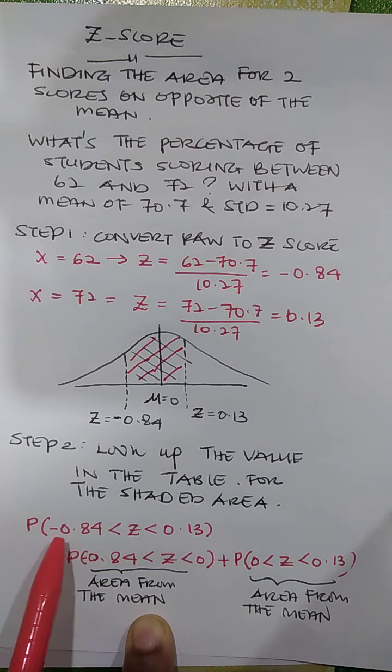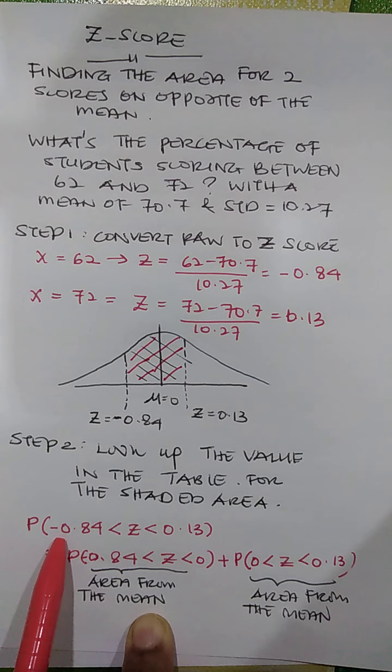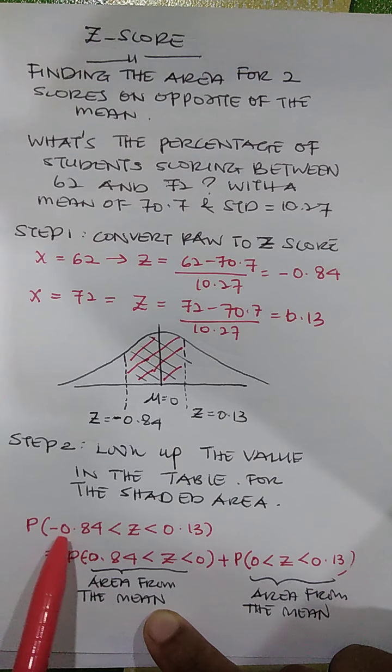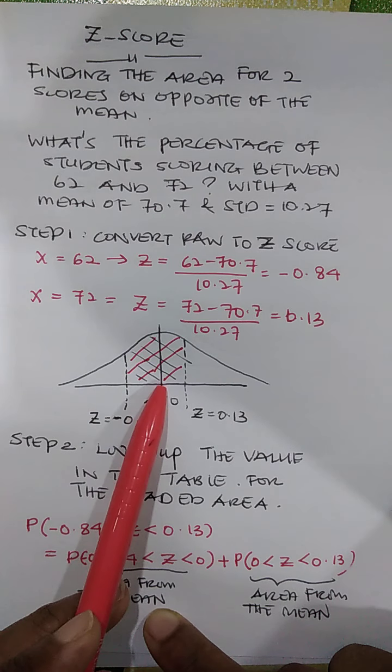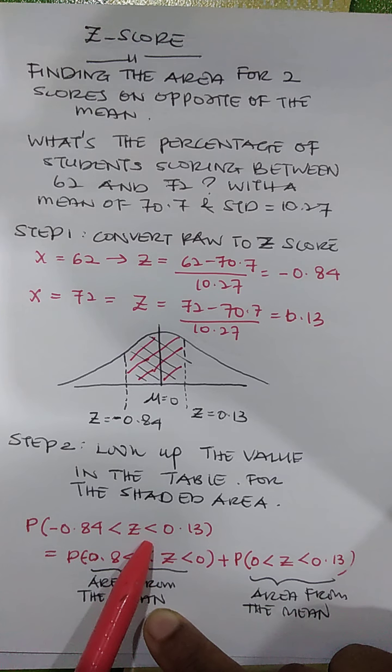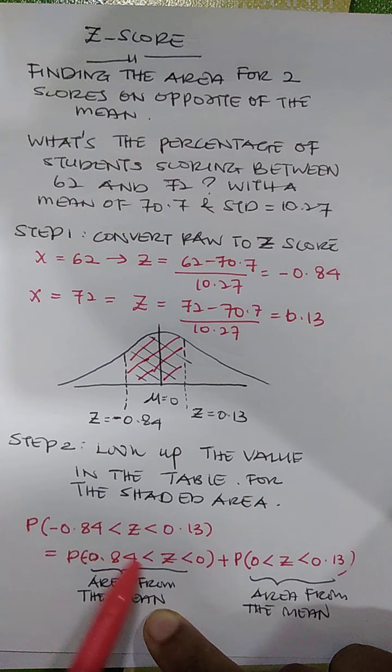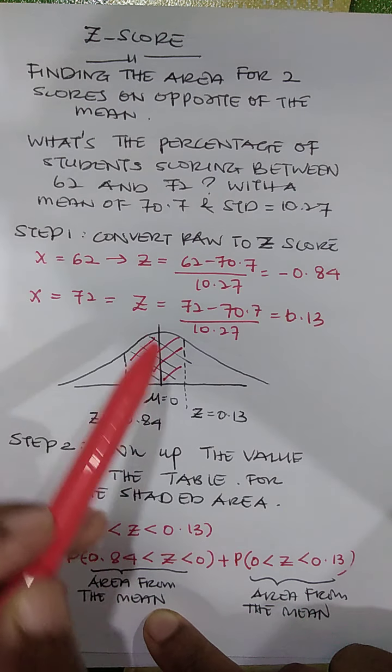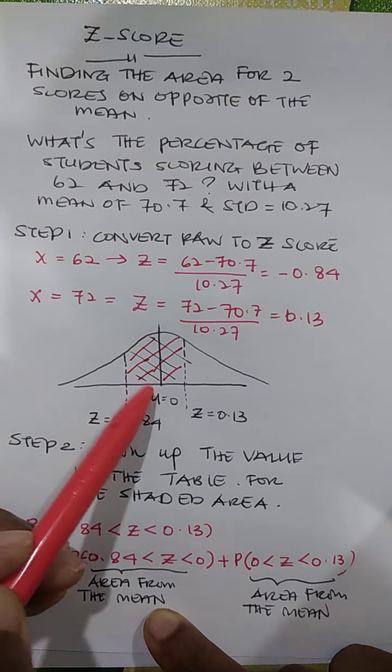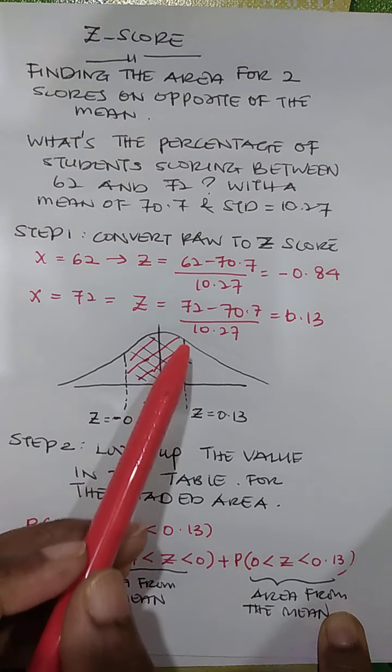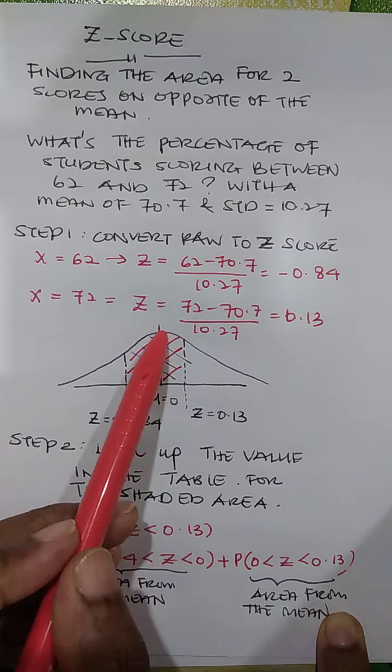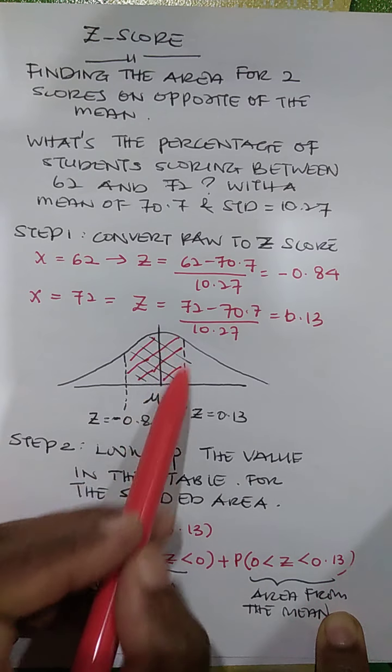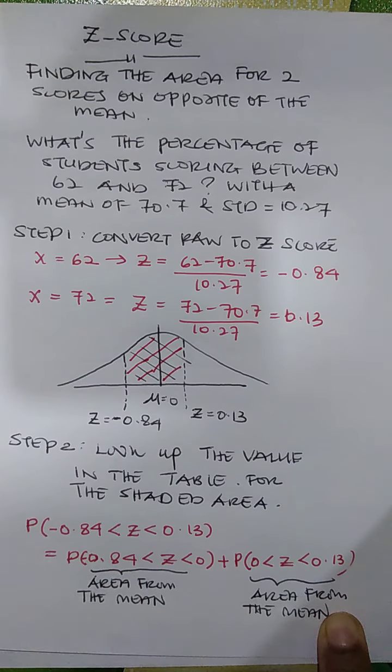So I have to find this area first and then I add to the next area. So the probability for the area or the proportion of the area between negative 0.84 till 0 plus the area from the mean to the specified Z score. This area you can find from the column B. The same thing applies here. From the mean to the Z score. This area can also be found in the table from column B.